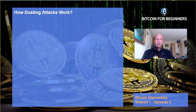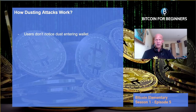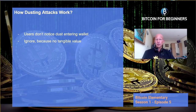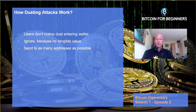How do dusting attacks work? Scammers know that users might not notice insignificant amounts of additional Bitcoin coming into their wallets. Even if they do take notice, some people might still ignore these tiny amounts as they are of no tangible value. So scammers would go ahead and send many of these tiny amounts of crypto — a process known as dusting — to as many addresses as possible.